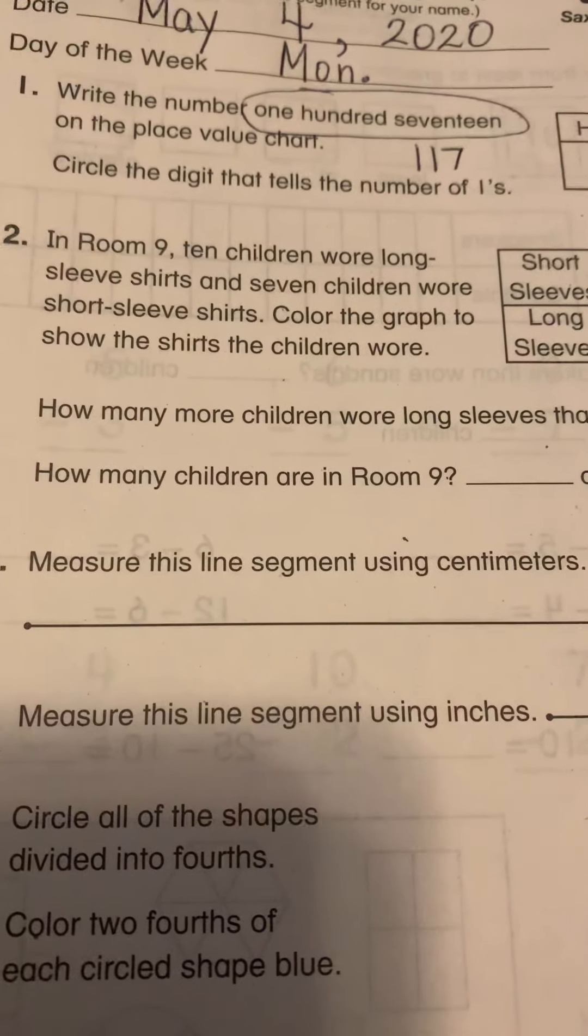And how many children are in room nine? So now we have to add 10 plus seven. If we had our 100 chart, we could just look at seven and go straight down. This is how many kids I had in my class last year. 17.